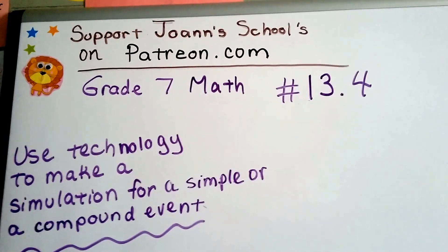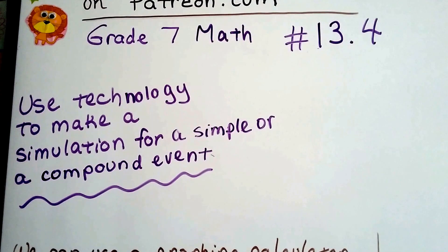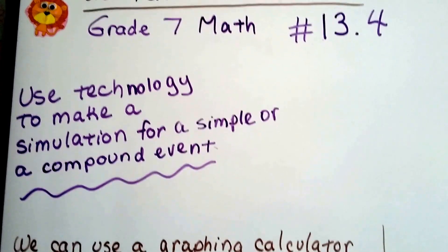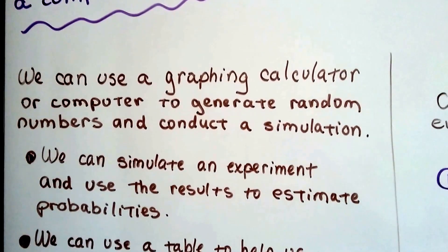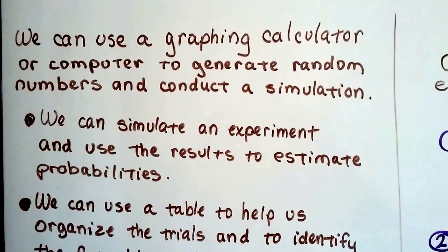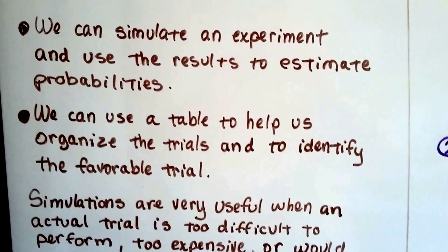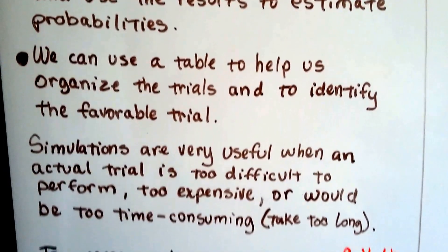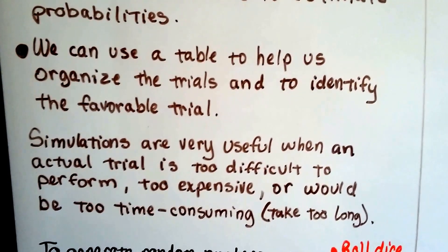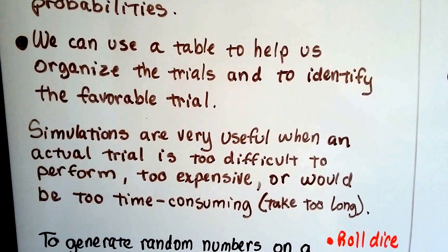Grade 7 math number 13.4: use technology to make a simulation for a simple compound event. We can use a graphing calculator or computer to generate random numbers and conduct a simulation. We can simulate an experiment and use the results to estimate probabilities. We can use a table to help us organize the trials and identify the favorable trial.